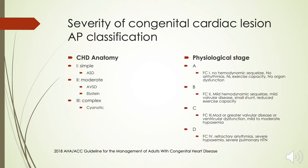Regarding physiological stage, this is based on several factors proven to correlate with outcome, including aortic dilatation, arrhythmias, concomitant valvular heart disease, end-organ dysfunction, exercise capacity, hypoxia, cyanosis, and New York Heart Association functional class. Physiological stage ranges from A to D. Stage A is functional class 1 with no hemodynamic sequelae, no arrhythmia, normal exercise capacity, no organ dysfunction, and normal aortic diameter. Stage D is functional class 4 with refractory arrhythmias, severe hypoxemia, severe pulmonary hypertension, and so forth.